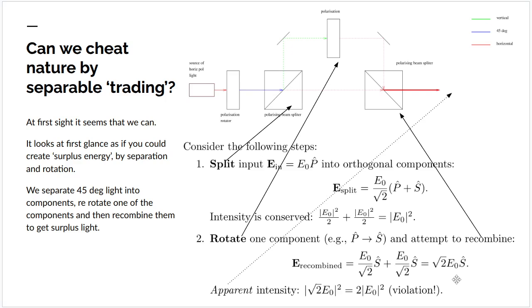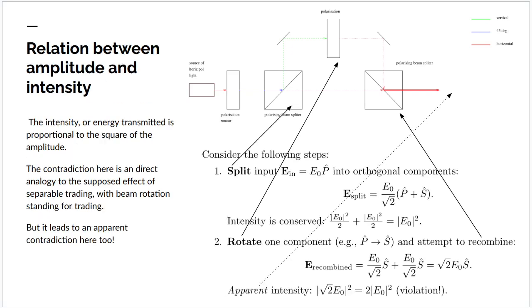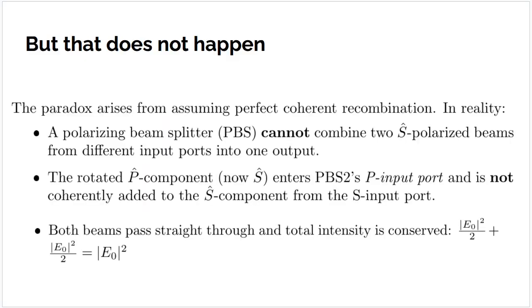So it appears that by carrying out just the set of operations I said are illegal in commodity space, I could get surplus light. Now what's wrong with this argument? I've said the energy is proportional to the square of amplitude, and what I've done is a direct analogy with the trading example. But again, we get a contradiction. Why won't it work?